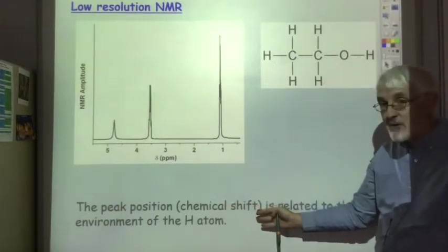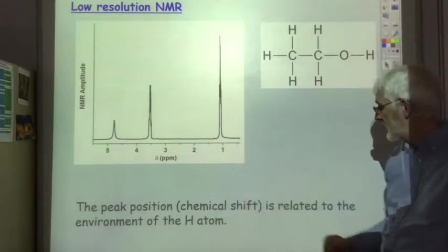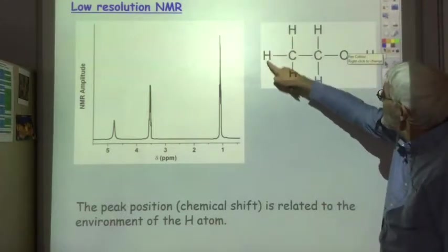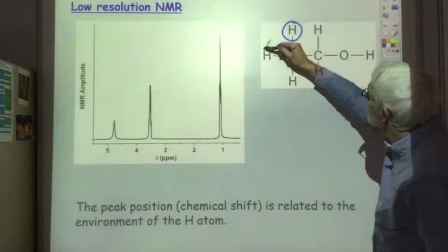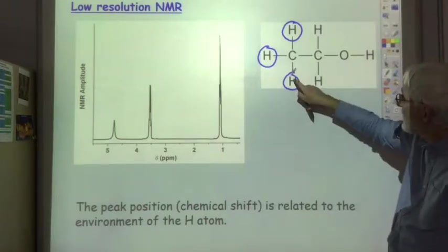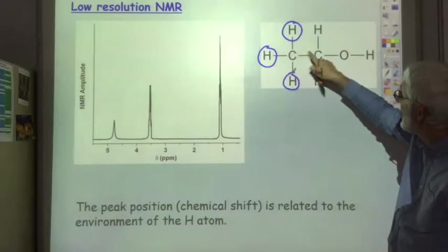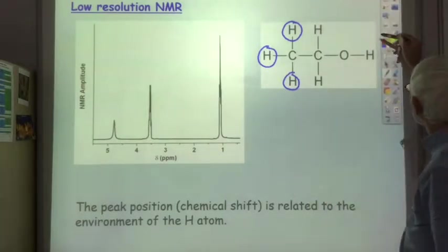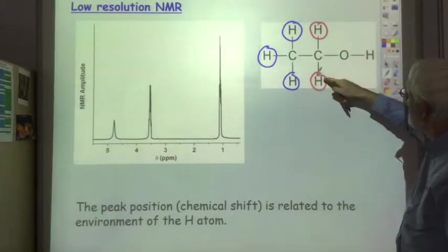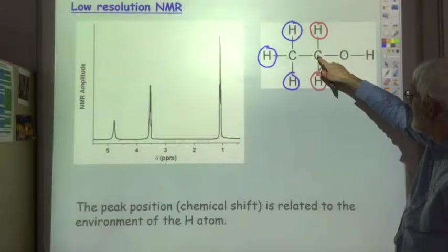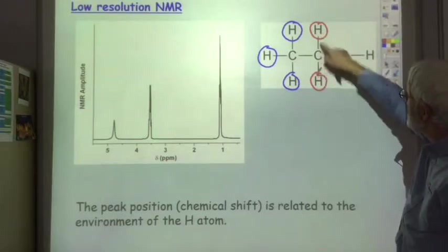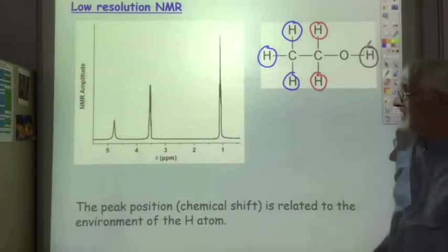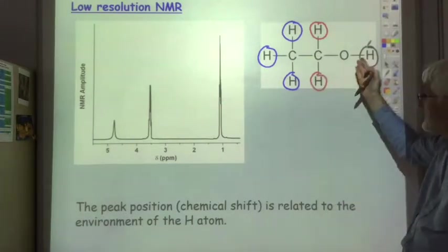The peak position or the chemical shift is related to the environment of the hydrogen atom. If we look at the ethanol molecule, these three hydrogen atoms on the end carbon are all in the exact same environment - they're all attached to a carbon which is attached to two other hydrogens and a CH2 group. However, these hydrogens here are in a different environment because the carbon they're attached to is not attached to two other hydrogens. So these two hydrogen atoms are in the same environment but it's different from this environment. And then this hydrogen atom here is in a different environment yet again. So there's three different environments and that's why there's three peaks.